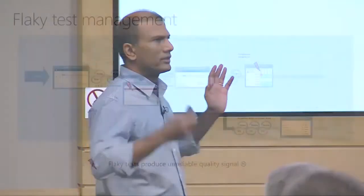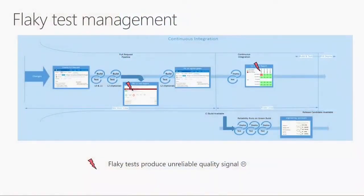We had an old reliability system where we would run a test in a loop 500 times on a good build. We repurposed that system and started running it for the L2 tests — the new tests we are writing — to make sure the quality of the new L2 tests is really good from the ground up, so we don't end up in the same situation we were in with the old straw tests.